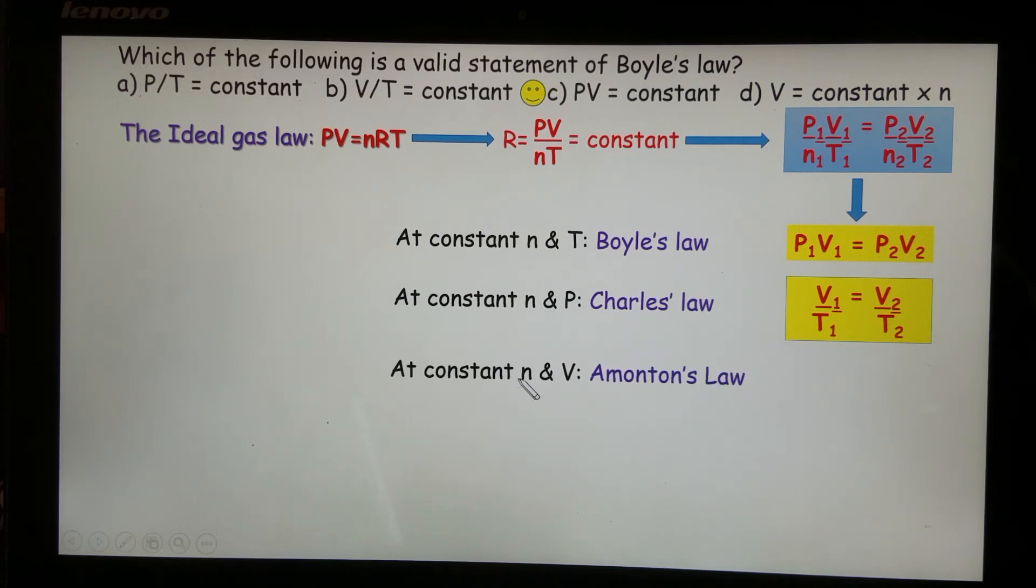Now if the number of moles and volume stay the same, we actually have Amonton's law, P1T1 equals P2T2. Because n and V, n1 equals n2, V1 equals V2, then you just have P1T1 left for the left-hand side, and then P2T2 left for the right-hand side.